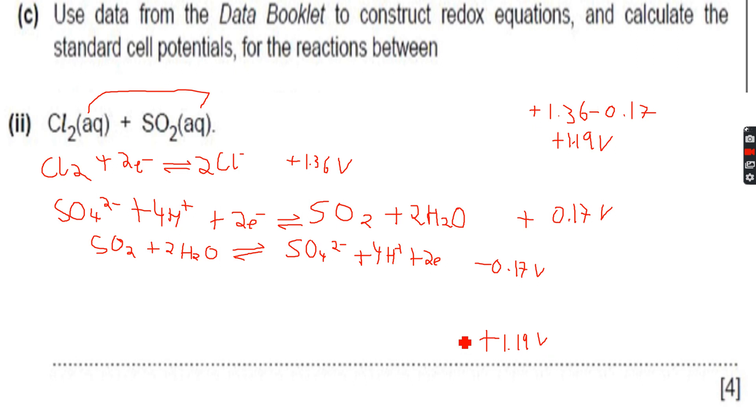This is the standard cell potential that we have calculated, but if we were asked to write an overall equation, two electrons here, two electrons here, cancel them out. Now write the overall equation: Cl₂ plus SO₂ plus 2H₂O gives 2Cl⁻ plus SO₄²⁻ plus 4H⁺. Charges balanced, species balanced, everything is good. You can see that the reaction is happening between Cl₂ and SO₂ and the water indicates aqueous phase.